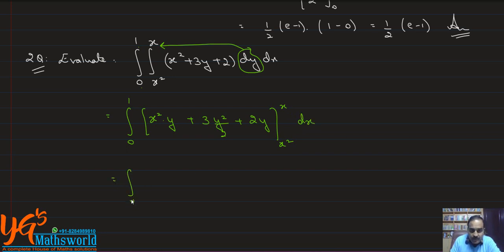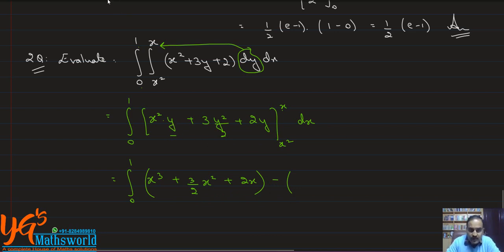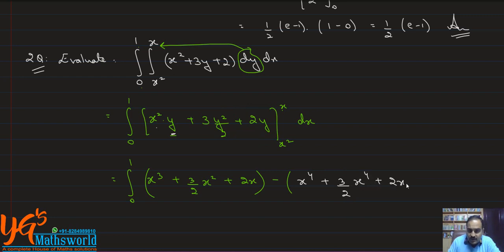Substituting upper limit minus lower limit. Upper limit is x: x·x = x³, plus (3/2)x², plus 2x. Lower limit is x²: x²·x² = x⁴, plus (3/2)(x²)² = (3/2)x⁴, plus 2x². So we have the integral from 0 to 1 of [x³ + (3/2)x² + 2x − x⁴ − (3/2)x⁴ − 2x²] dx.